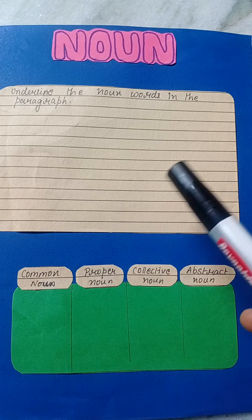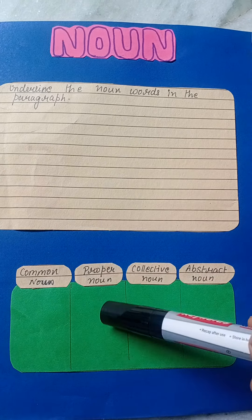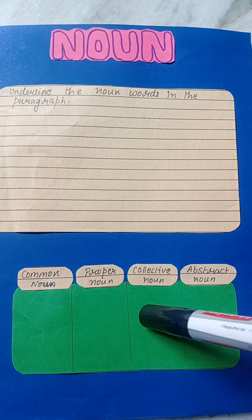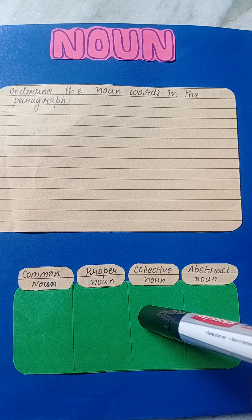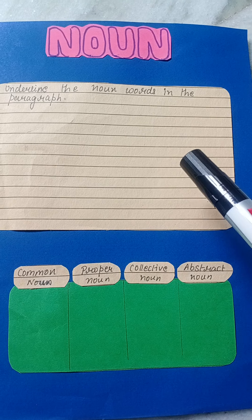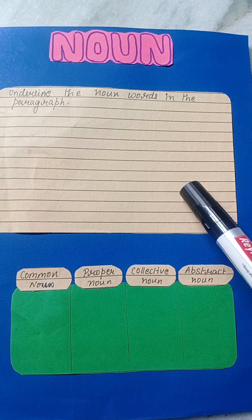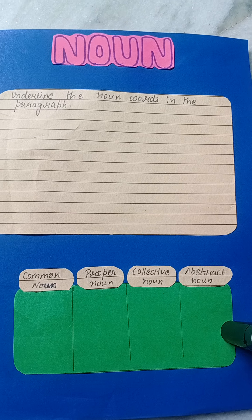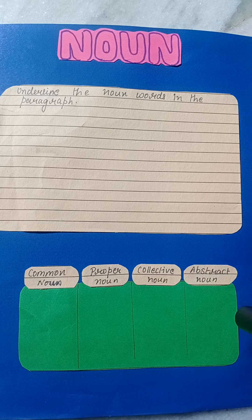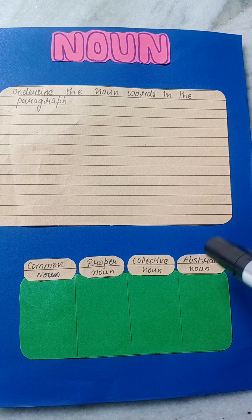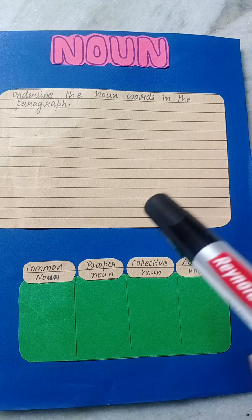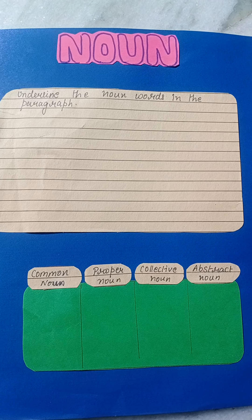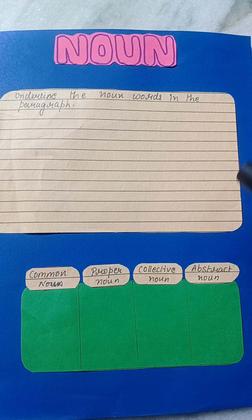This is a fifth class textbook, unit number two. You can take any paragraph from it — not short, not too small. You will take a big paragraph. Better is that you take any paragraph from your book and write it down.